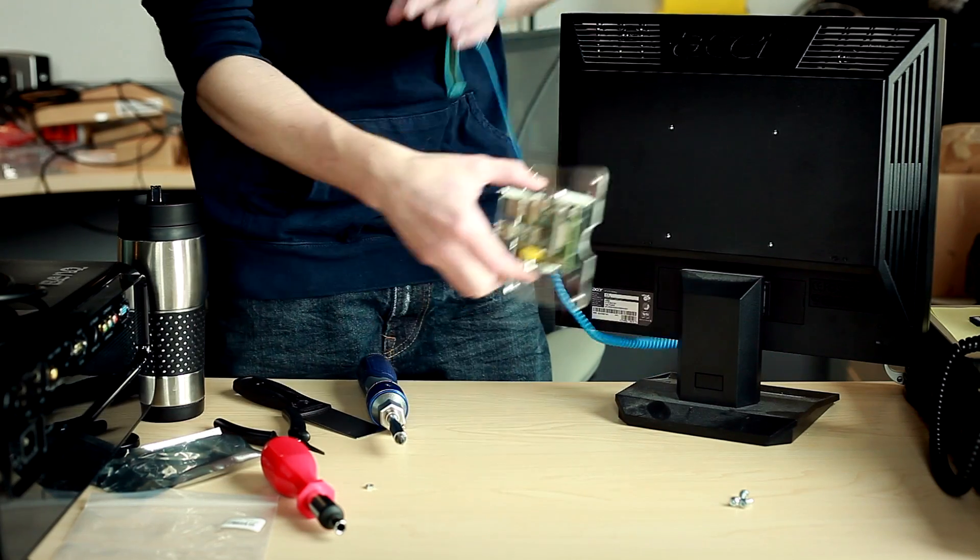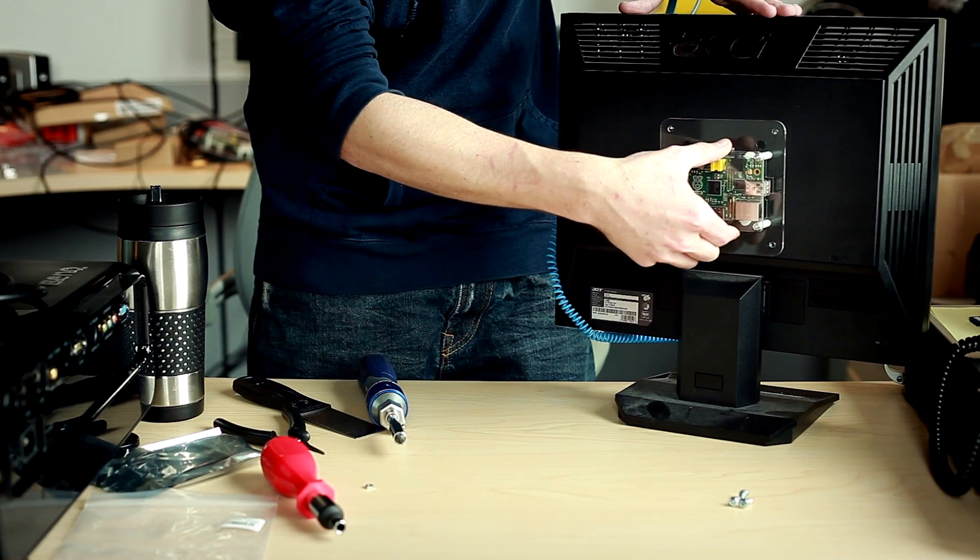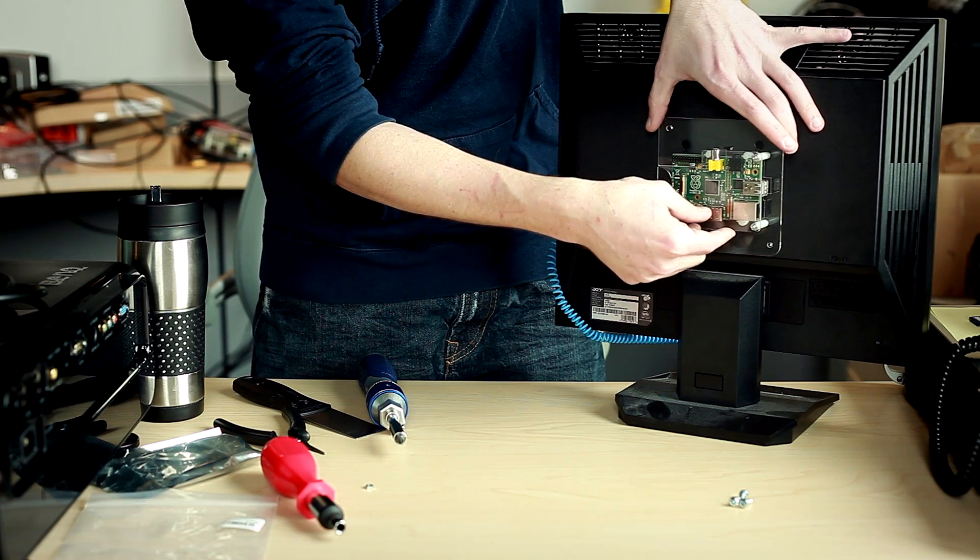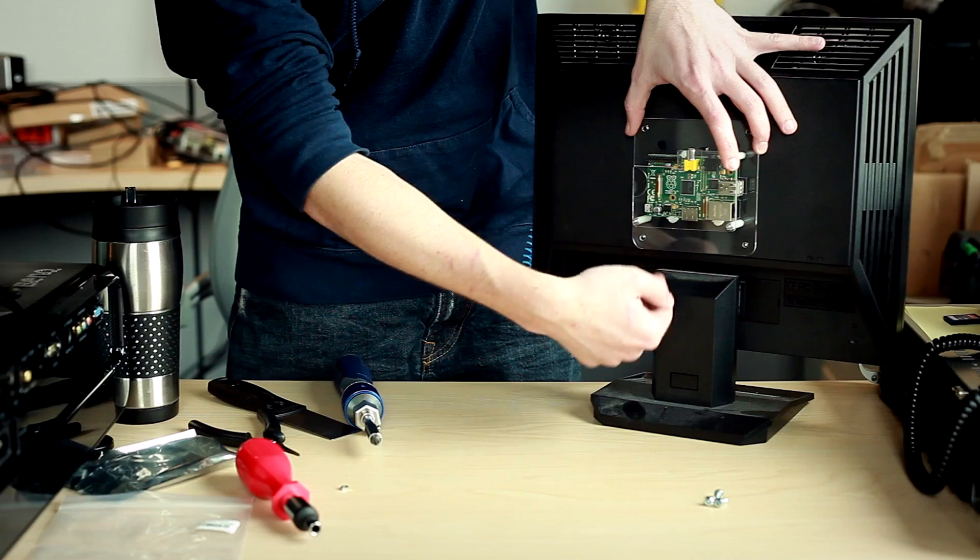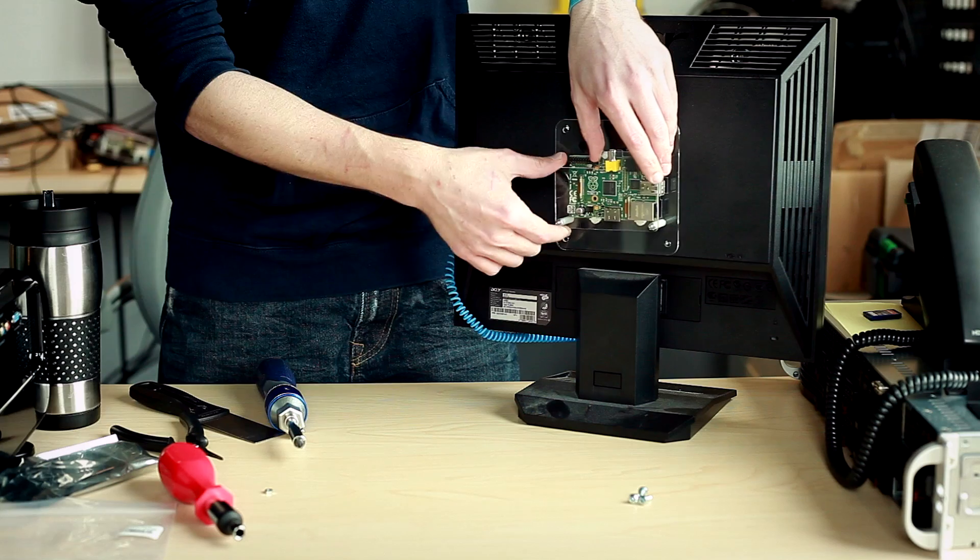Now how you mount this to your monitor is entirely up to you. There's basically two ways that you can do it. Personally, I like to have the HDMI on the bottom, just because I don't really utilize any of the ports on the top for the time being.